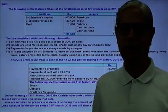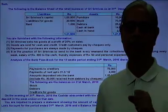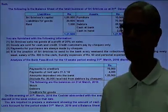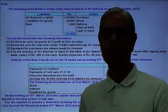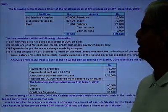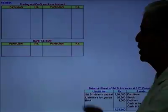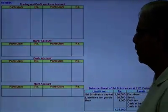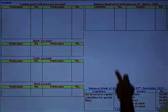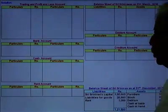For the purpose of finding out the cash defalcated, I need to prepare cash account and bank account separately. I am going to prepare all accounts found in the opening balance sheet, carrying those balances forward into the respective accounts. These include: trading profit and loss account, bank account, cash account, rent account, balance sheet, debtors account, and creditors account.